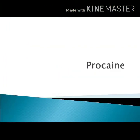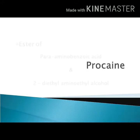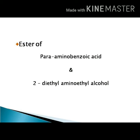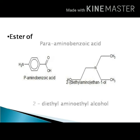The first local anesthetic agent we are going to see is procaine. As mentioned earlier, procaine is an ester — an ester of para-aminobenzoic acid and diethylaminoethyl alcohol. The amino group's two hydrogen atoms are replaced by two ethyl groups, giving diethylaminoethyl alcohol.